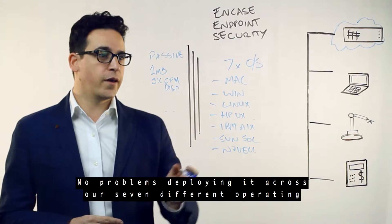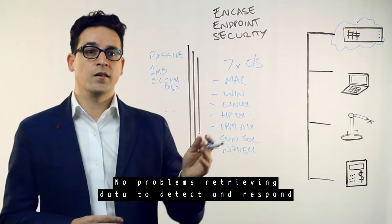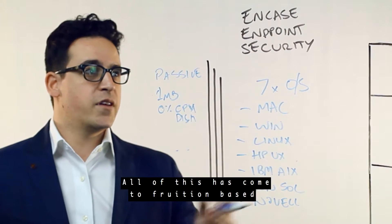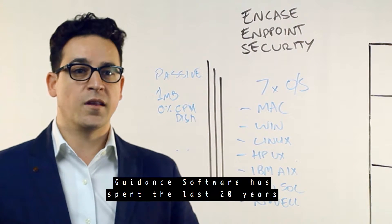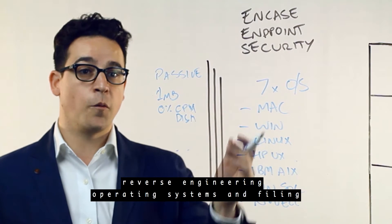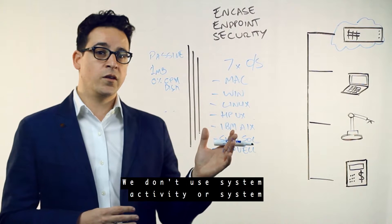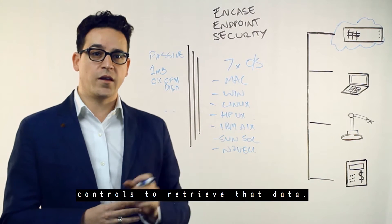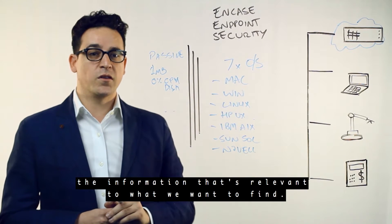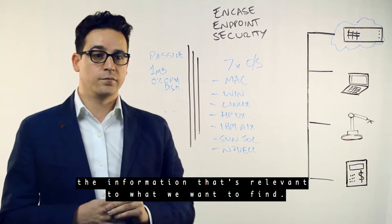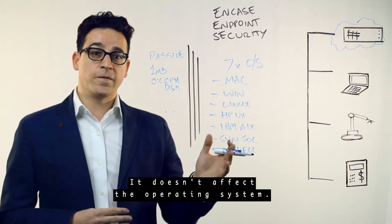No problems deploying it across our seven different operating systems. No problems retrieving data to detect and respond to advanced threats. All of this has come to fruition based on our forensic background and knowledge. Guidance Software spent the last 20 years reverse engineering operating systems and filing systems to retrieve data. We don't use system activity or system controls to retrieve that data — we've retrieved it ourselves by identifying and pulling out the information that's relevant to what we want to find. The passive agent itself is a kernel-level driver; it doesn't affect the operating system.